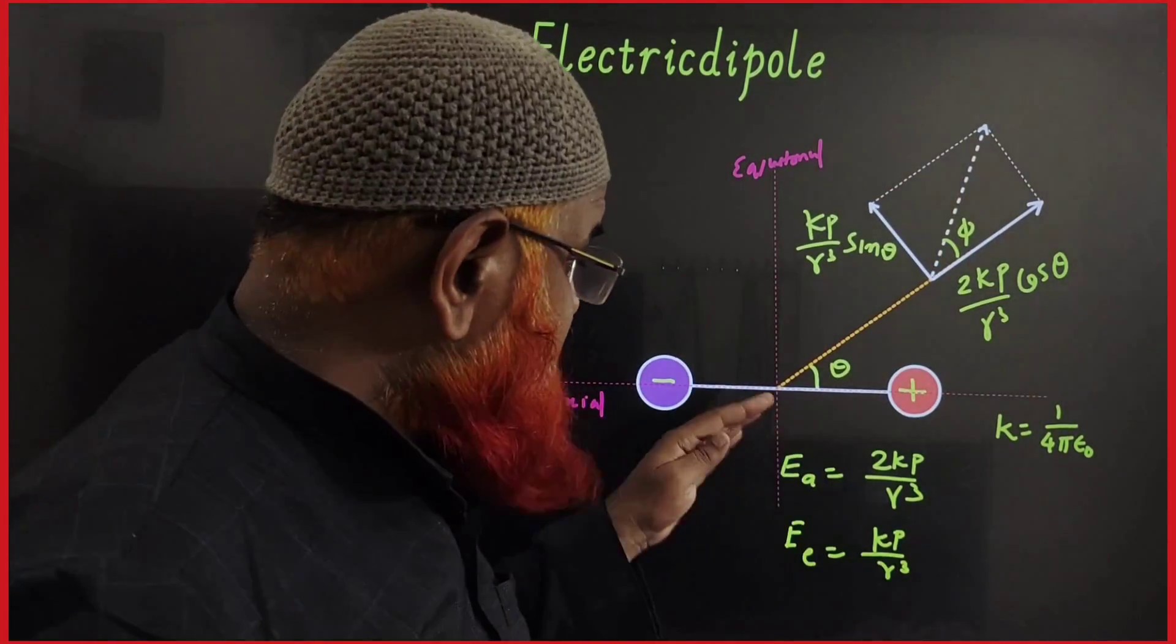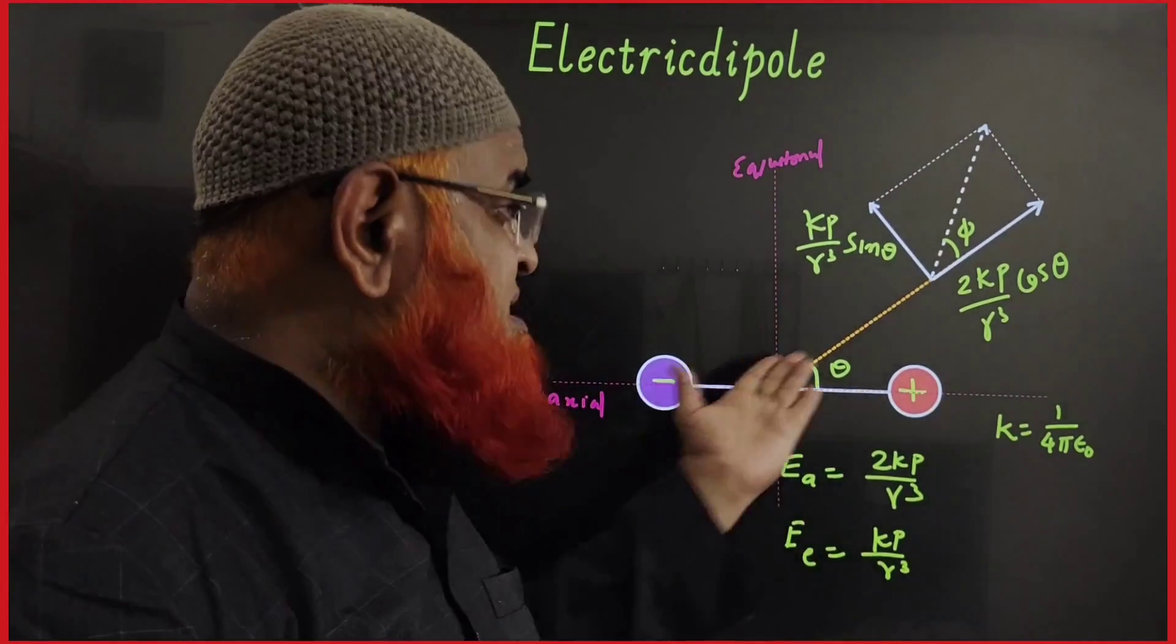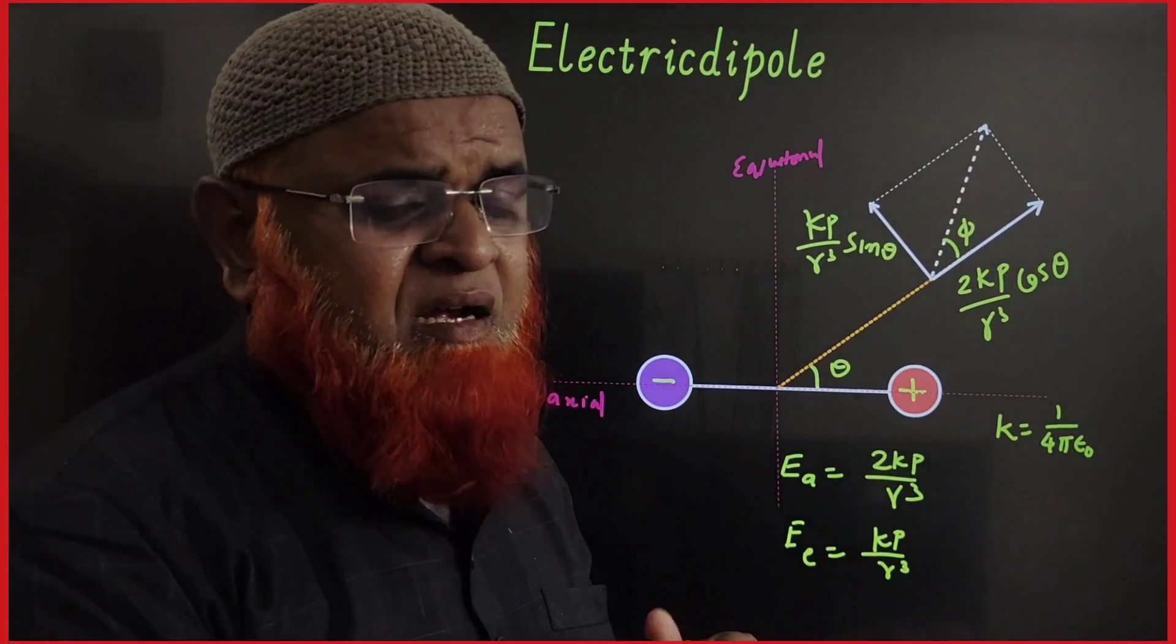This is an equatorial line. It is some other line. If you want to find out electric field intensity along this line, then what you have to do?